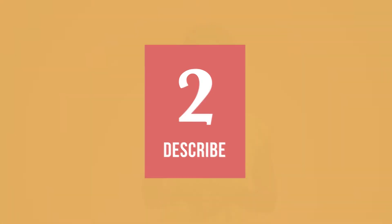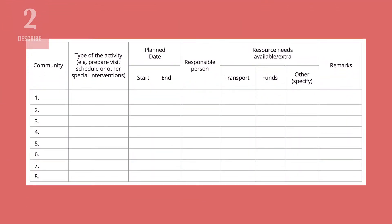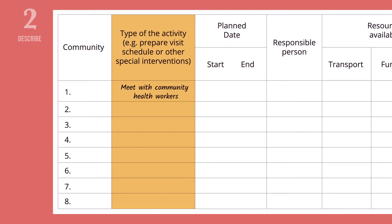Next, describe the corrective activities you have planned to target priority problem areas, such as special interventions or social mobilization activities. For example, you may need to meet with community health workers to determine a convenient day and time to deliver vaccines to fishermen families. Or, you may need to perform a basic repair on a piece of cold chain equipment that has been non-functional for too many days.